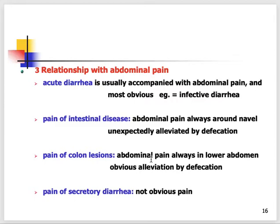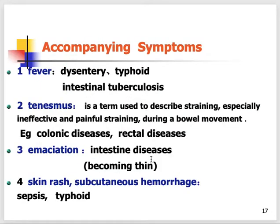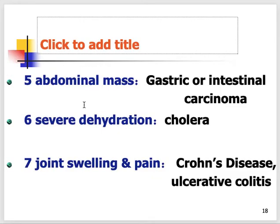I am more interested in telling you how to take the history of diarrhea — what to ask and how to differentiate between infective and inflammatory diarrhea. There are accompanying symptoms like tenesmus, which is the feeling of incomplete emptying — when you've gone to the toilet and done defecation but still feel the sensation that you need to defecate again. That is called tenesmus.